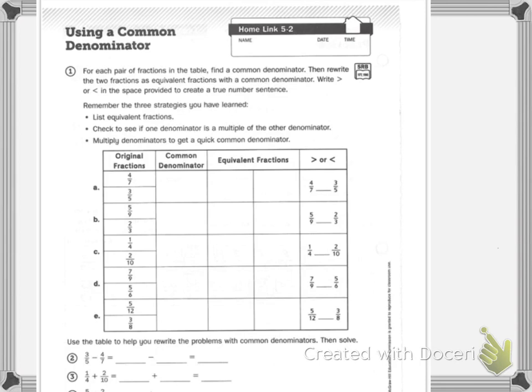The strategies we've learned: list the equivalent fractions, check to see if one denominator is a multiple of the other, and multiply denominators to get a quick common denominator.